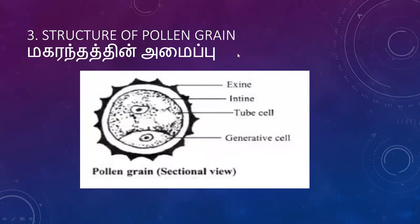The structure of the pollen grain: pollen grain is unicellular, uninucleate, and haploid in nature at the one-celled stage. At pollination, in 60% of flowering plants, it is at the two-celled stage.